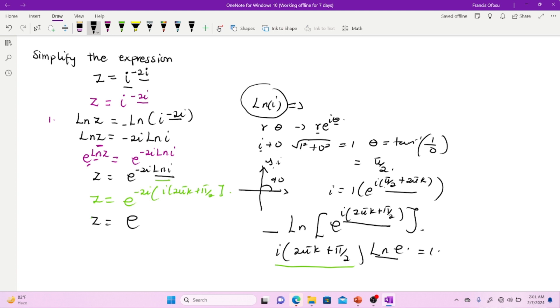So I'm going to have negative 2i multiplying this place. I have i here inside. Then you see 2πk plus π on 2. You can multiply it to be maybe 4πk plus π all out of 2.